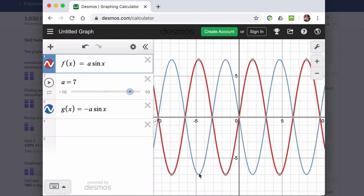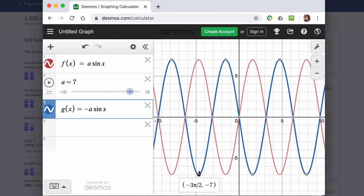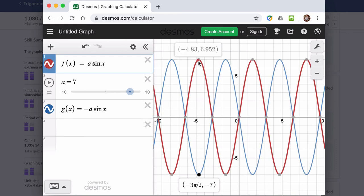But if I throw g of x in there, that distance from the midline is down to negative seven, but the distance is still seven. So whether I'm going down to negative seven or up to positive seven, those amplitudes are equal. Even though they're opposite numbers, they're equal distances from the midline.